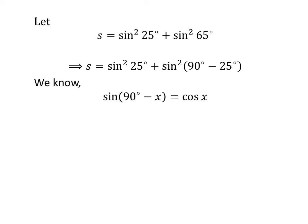We know the trigonometry identity sin(90° - x) = cos(x). So, application of the above identity gives us s = sin²25° + cos²25°.